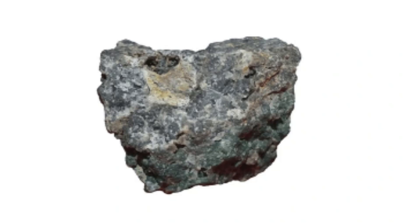Stratiform deposits occur as layers within sedimentary rocks and are often associated with volcanic rocks. An example is the Shuikoushan mine in China. Disseminated and massive sulfide deposits contain antimony minerals scattered throughout a host rock or in massive sulfide bodies, such as the Bau district in Malaysia.